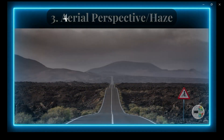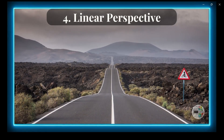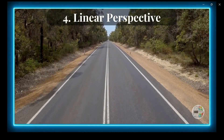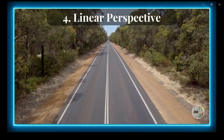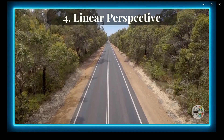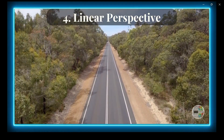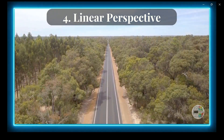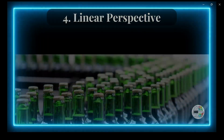Number 4: Linear Perspective. This cue is based on the convergence or meeting of straight lines at a point on the horizon. When you look at a long straight road or a railway track, they appear to narrow or meet at a point in the distance. This helps you understand that if the tracks are wide apart, that part of the road is closer to you, and if the tracks are close together, you have a long road ahead.